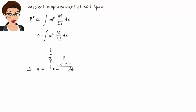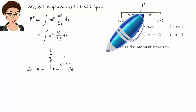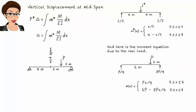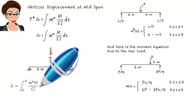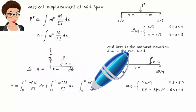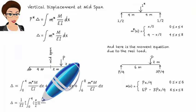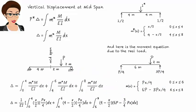Let's calculate delta at the beam's mid-span. We determined M star for this beam earlier. Note that M star and M equations are defined over different intervals. To make the integration work, we need to divide it into three parts. If we assume a constant EI for the entire beam, we get the result. So, vertical displacement at the beam's mid-span is the computed value.